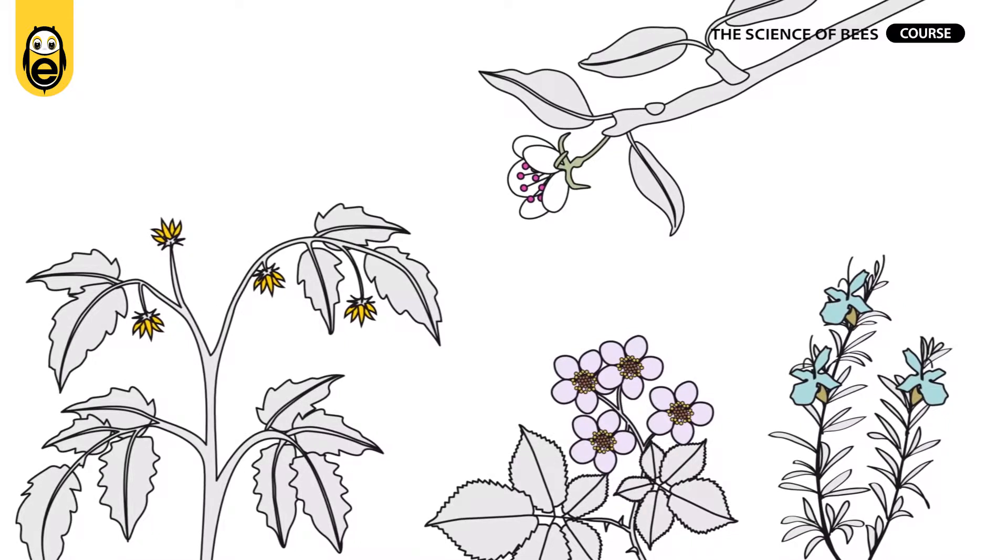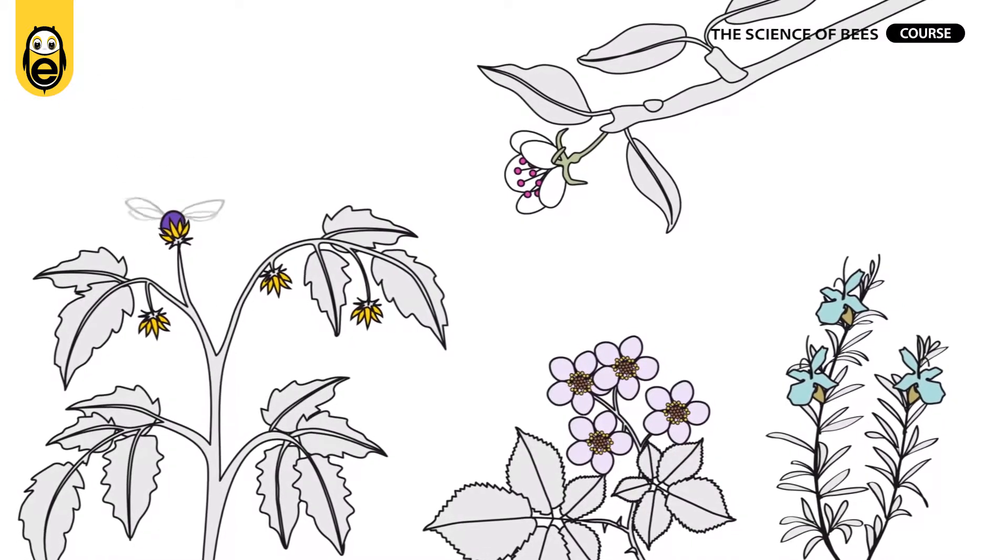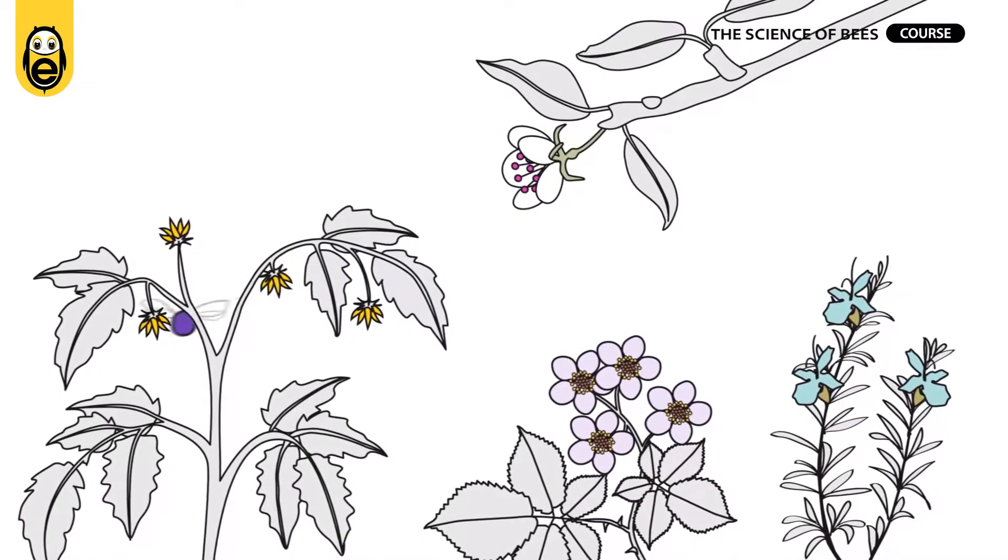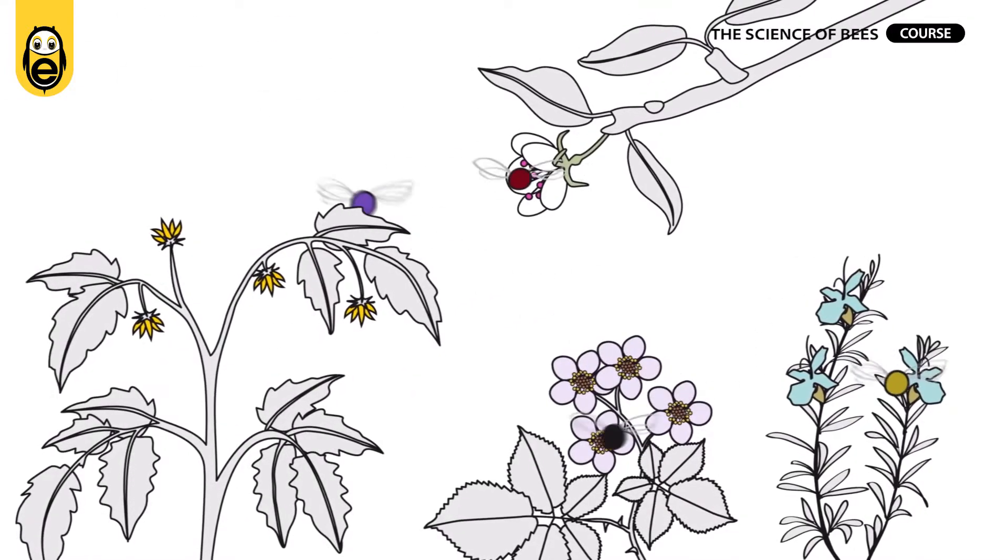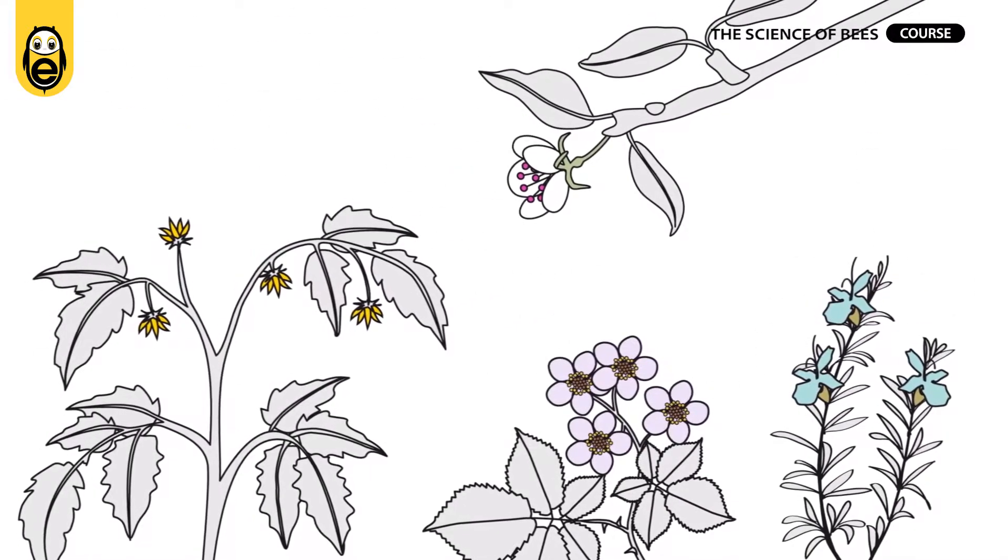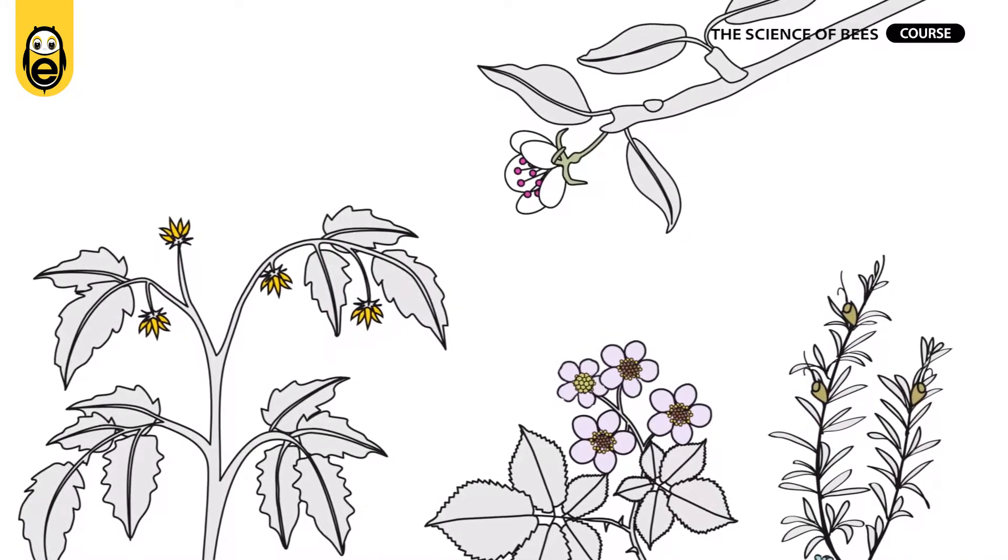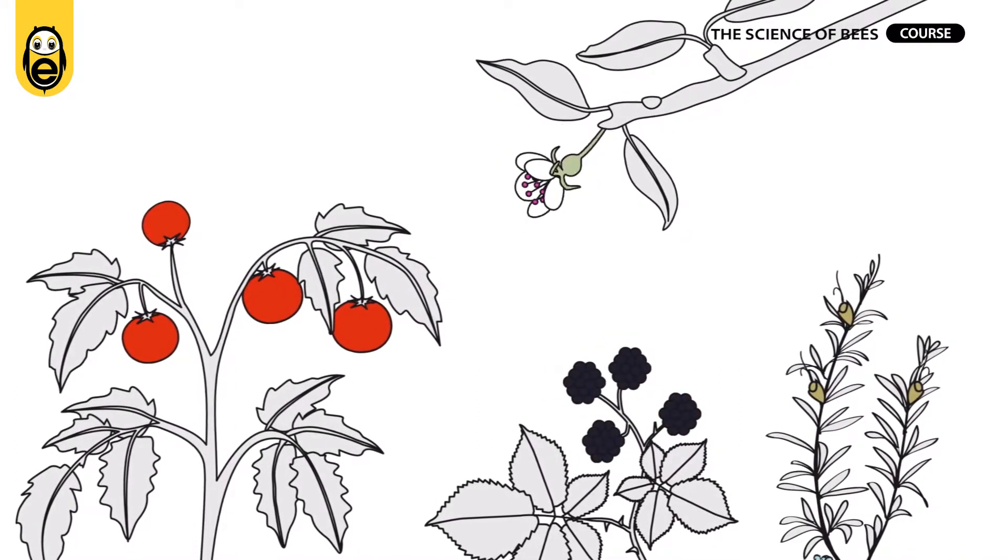For example, some bee species are awesome at pollinating tomatoes, while others are good with rosemary, pears, or blackberries. Altogether, they allow plants to reproduce, including most of the crops that feed us.